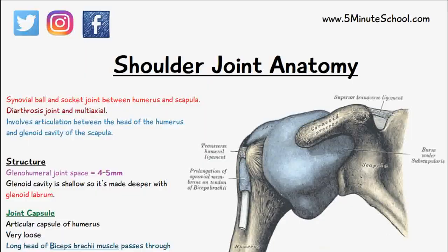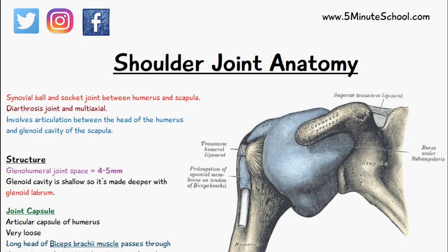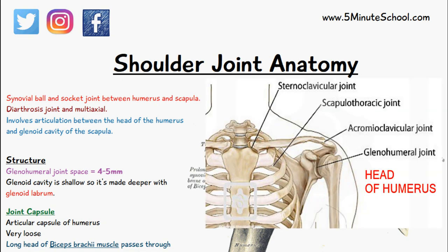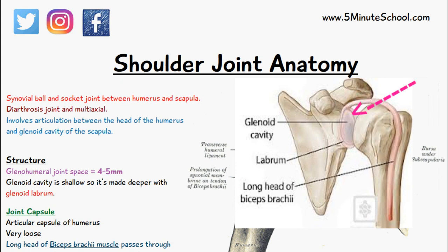In today's video we're going to be talking about the shoulder joint. It's known as a diarthrosis joint or a synovial ball and socket joint, which basically means that it allows for free movement. In fact, the shoulder joint is one of the most mobile joints in the whole body, and it involves the articulation of the head of the humerus and the glenoid cavity of the scapula.